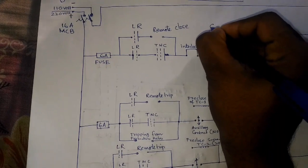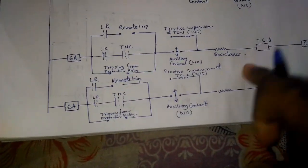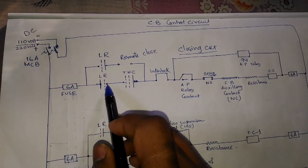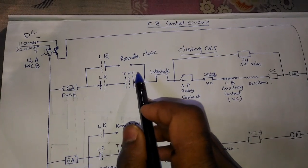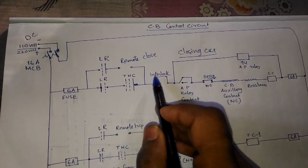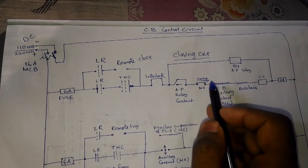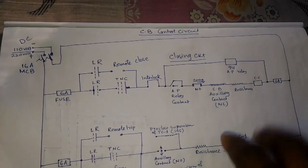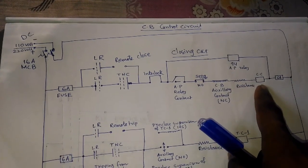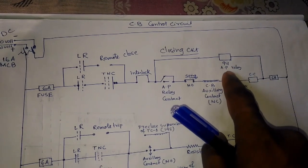We are now discussing the closing circuit. This includes the closing circuit and two tripping circuits. First, there is the local-remote selector switch, then the TNC (Trip-Neutral-Close) switch, followed by the pistol grip spring mechanism. This is the interlock, this is the anti-pumping relay contact, the spring charge normally open contact, and after spring charge it is an NC contact. This is the circuit breaker auxiliary contact — it is NC — followed by a resistance before the closing coil, a 6-ampere fuse, and the anti-pumping relay 94.